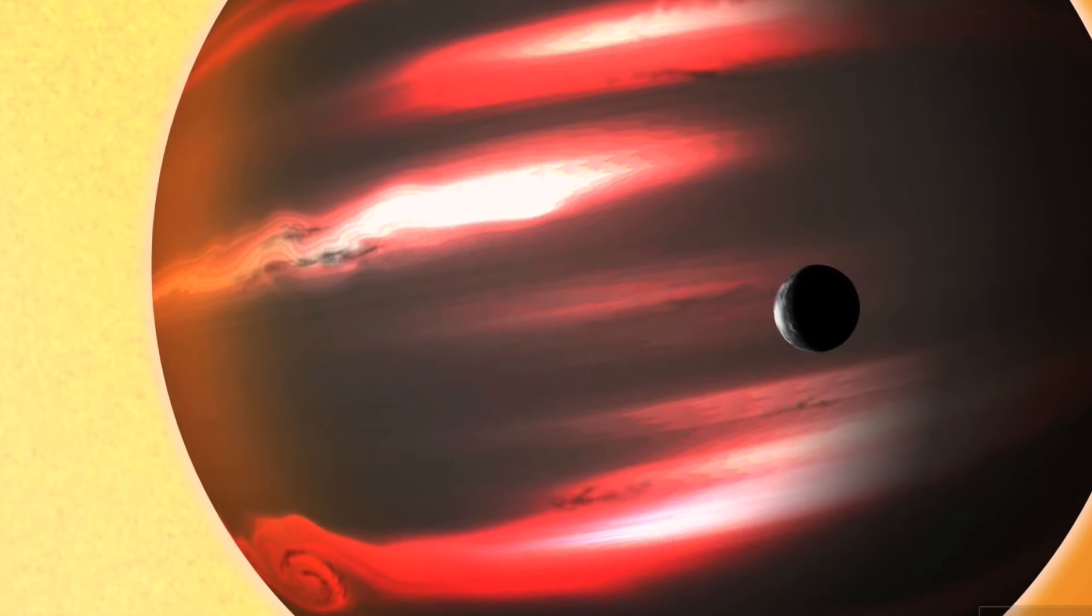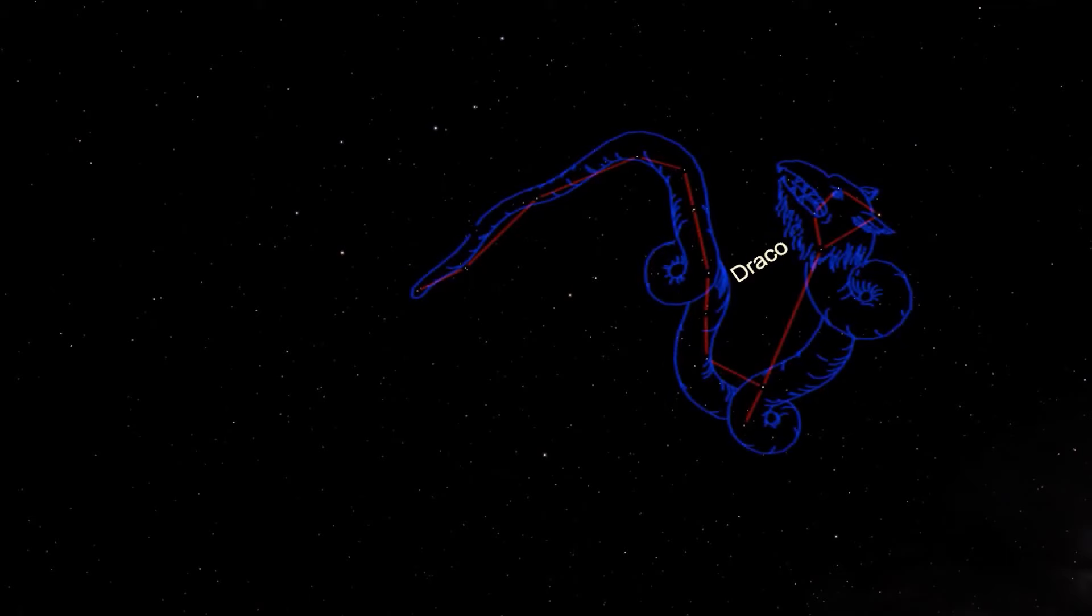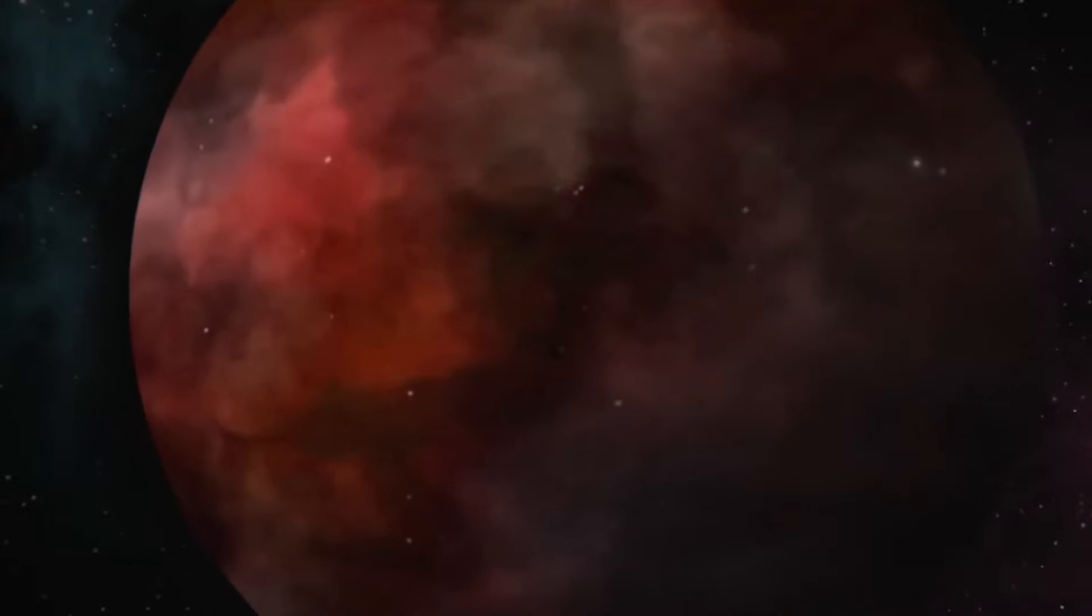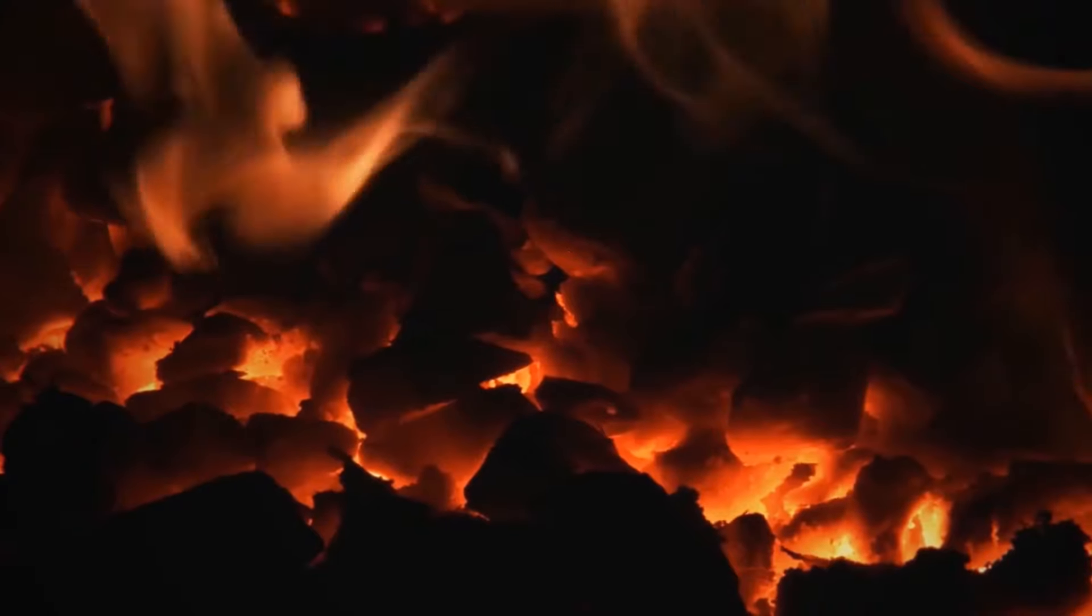It's located 750 light years away in the constellation of Draco and has a temperature of around 1800 degrees Fahrenheit or 980 degrees Celsius.